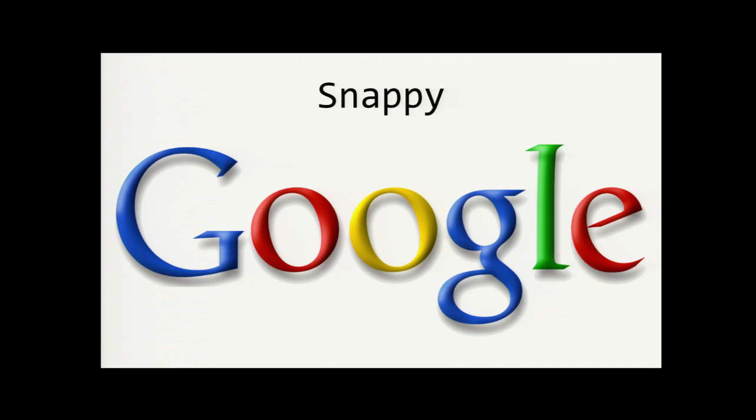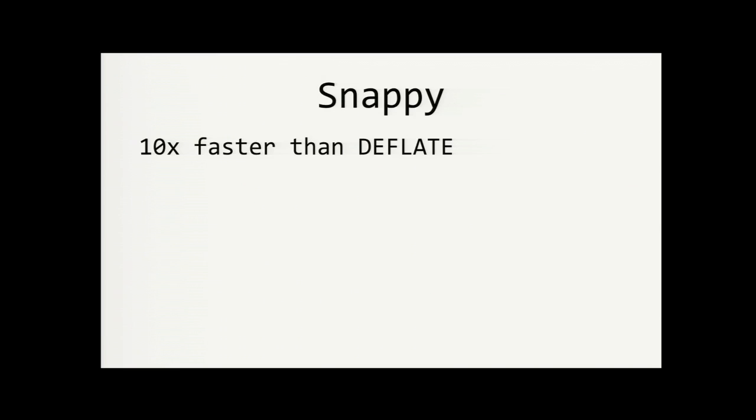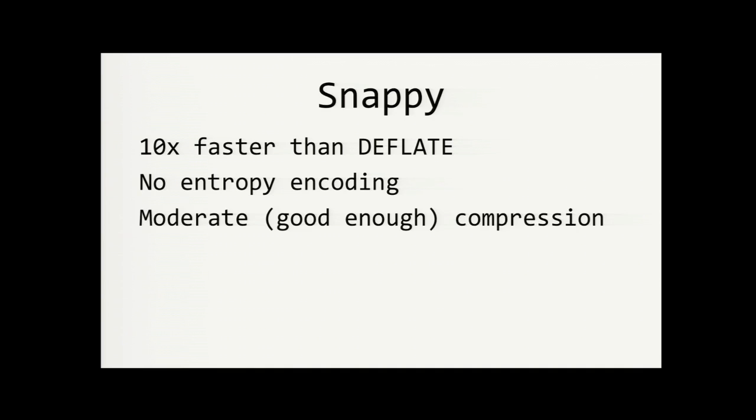The Snappy algorithm was developed at Google and open sourced in 2011. Snappy was designed to be as fast as possible. It's an order of magnitude faster than Deflate for most data. And to keep it as fast as possible, it does not do any entropy encoding. The raw symbols in the data are written to the output stream. Its goal is just moderate compression but at very high speed. It might only compress half as much as Deflate in some cases. But that's considered good enough. My team uses Snappy for data in the Hadoop file system and also in Kafka messages.